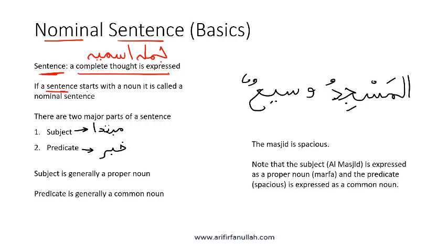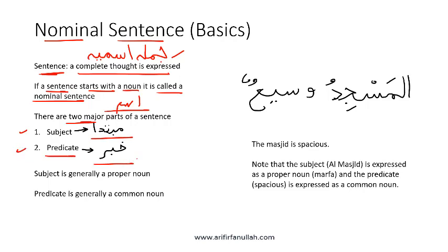If we have a sentence which starts with a noun, which is Ism in Arabic, then this is called a nominal sentence or a Jumlah Ismiyya. With a nominal sentence, there are two major parts: the subject or Mubtada, and the predicate or Khabar. The Khabar is basically information about the subject or Mubtada.